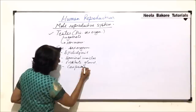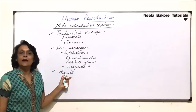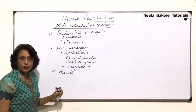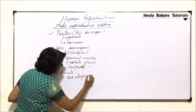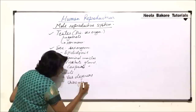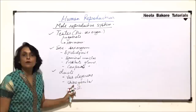These are the structures which are going to help. There are also ducts which will help in conduction of the sperm. The ducts include vas deferens. There is also the urinogenital duct, and the reason it is called urinogenital is because in males it is a common passage for conduction of urine as well as sperm.